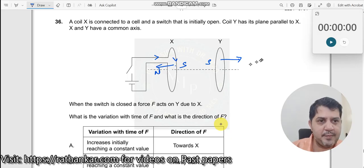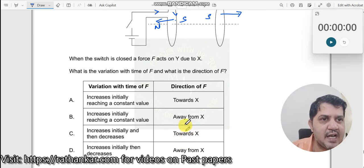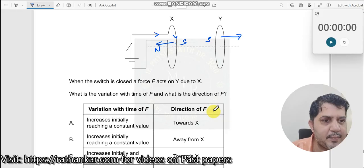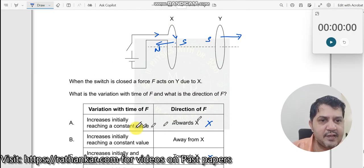So which means there is a force acting on Y in this direction. Repulsion means it should be away from here. It should not attract it. So because south and south here, it should repel over here. So when you say it is repelling, what does it say? It is away from X. So therefore towards X is incorrect. Towards X is incorrect. Away from X is right.